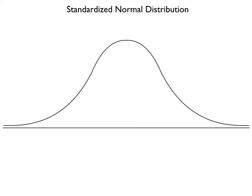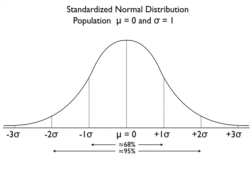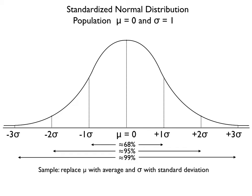We have the curve, and under a population analysis, we use the mean equal to zero and the standard deviation equal to one. We use Greek letters to distinguish between populations and samples. Our average or mean would be zero and the standard deviation would be one, adding values to both sides, plus or minus. About 68% of the area under the curve is plus or minus one standard deviation, 95% is plus or minus around two standard deviations, and three standard deviations captures about 99% of the area. When we do a sample, we replace mu with average and sigma with standard deviation, to distinguish between a population and a sample.